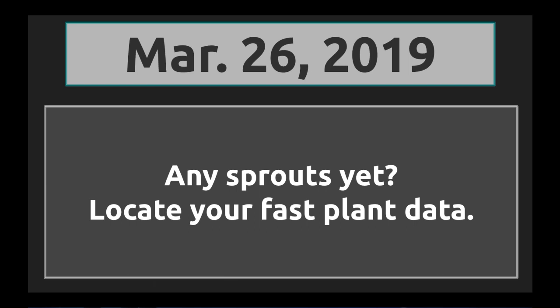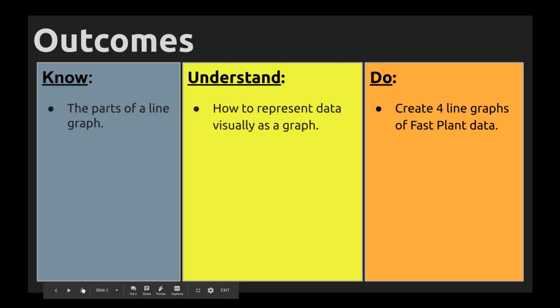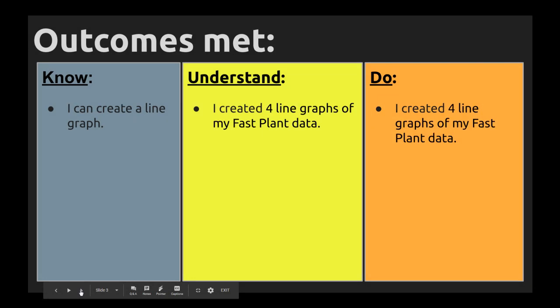And then locate your first generation fast plant data because if we take a look at the outcomes, they're all about graphs, specifically line graphs. So your outcomes are met by Friday if you can graph your four line graphs of your fast plant data correctly.